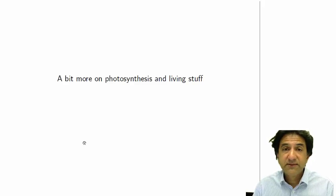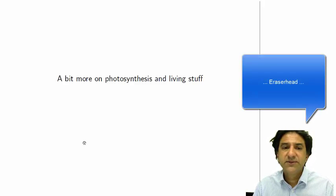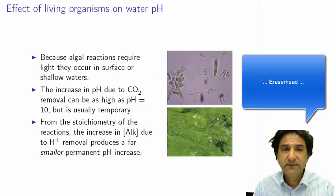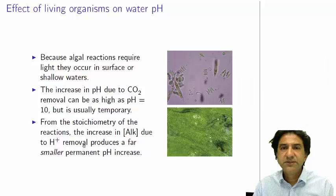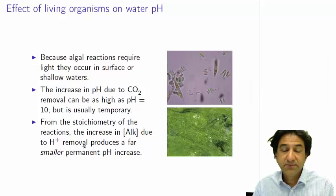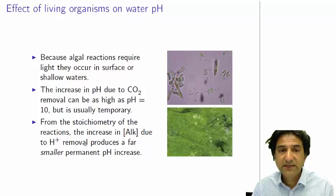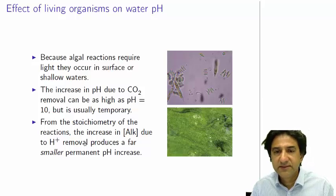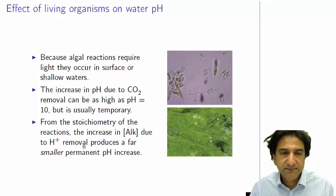Hi, welcome to Chemistry 3006, the hydrosphere. I want to say a little bit more about photosynthesis and living things. We saw before that the open carbonate system was pretty complicated. It was affected — the pH of the system was affected by turbulence, temperature, and of course, living things. And that accounts for a lot of the effects in natural waters.